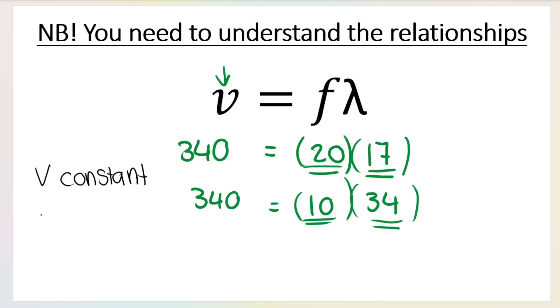Take note of what I've done. V is constant, so V is the same. I haven't changed V. I haven't changed the speed. I halved frequency, so I divided frequency by 2. Frequency went from 20 hertz to 10 hertz. I kept speed the same. I halved frequency. What happened to the wavelength? How do you get from 17 to 34? You times it by 2. If I halve the frequency, if I divide the frequency by 2, I double the wavelength if my speed is constant.